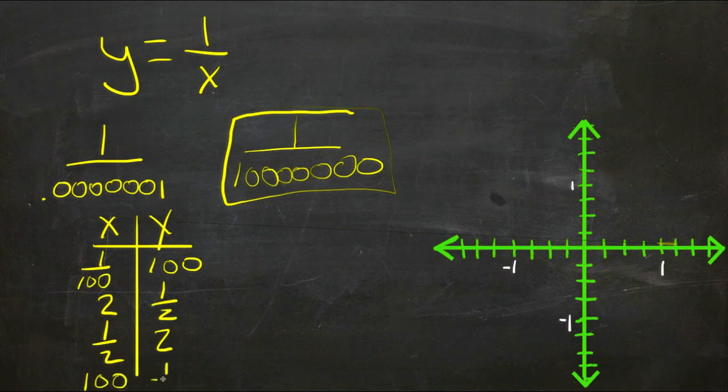So let's just take a look at where these points would be on the graph. If x is two, y is a half, so there's a point like right here. If x is a half, y is two, so there's a point right here.